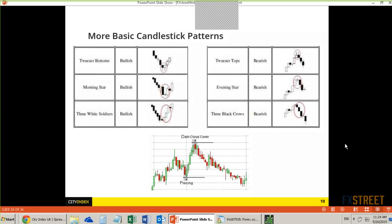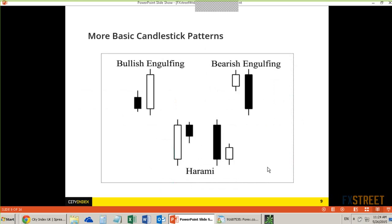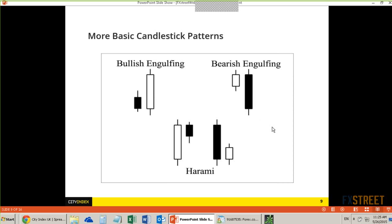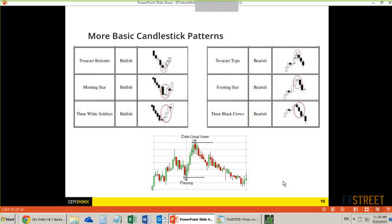Three white soldiers, three black crows — the story they're telling you: three white soldiers is bullishness after a turn in the market, three black crows is bearishness after a turn in the market. Forget about the names, just look at the story they're telling. By far, the candlestick patterns I like most are the hammer, the shooting star, the doji, and spinning tops. Then secondarily the engulfing patterns and the harami. Three white soldiers is really just a variation on a bullish engulfing pattern — the bulls winning against the bears after a turn.